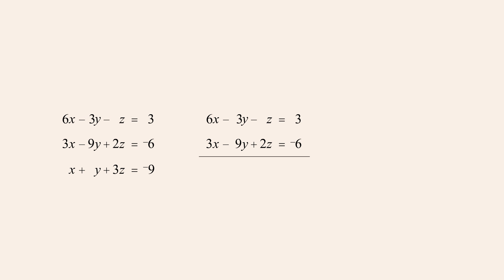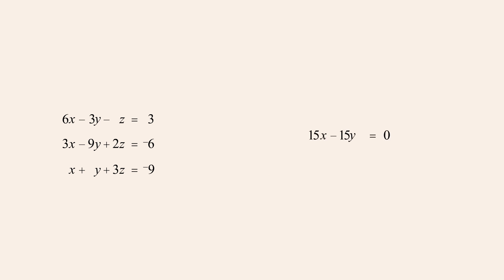Multiplying the first equation by two and adding the equations gives us x minus fifteen y equals zero, or dividing both sides of the equation by fifteen, we get x minus y equals zero.